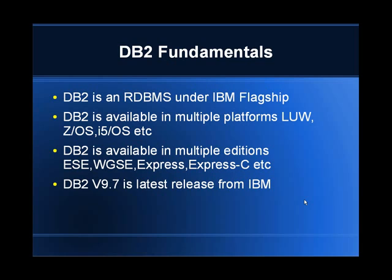DB2 is also available in multiple editions: ESC, WGSC, Express, and Express-C. These multiple editions serve mostly in terms of price point and feature choice for the customer. For a large enterprise application where resources consumed are huge, you go for the ESC edition — the Enterprise Server Edition. The Workgroup Server Edition is a limited edition; it supports only up to a two-processor machine and only up to 4 GB of RAM. Feature-wise, there are also some restrictions and hardware limitations. Those are the differences between the multiple editions.